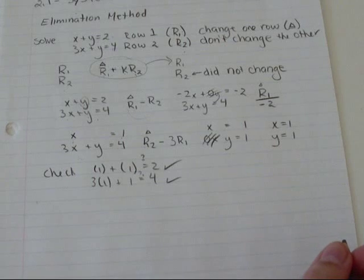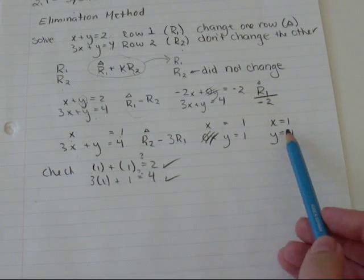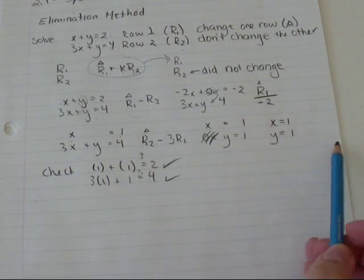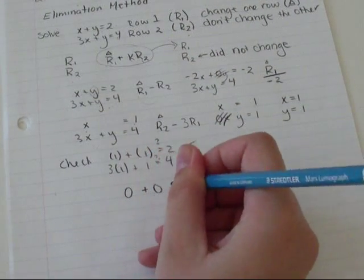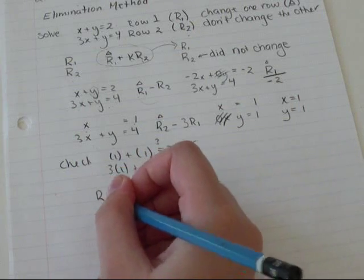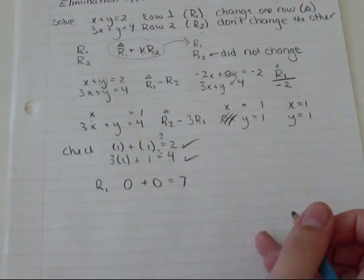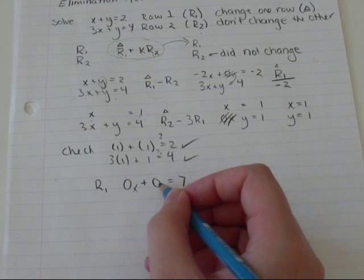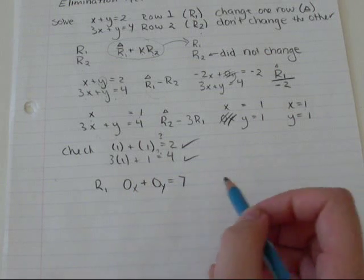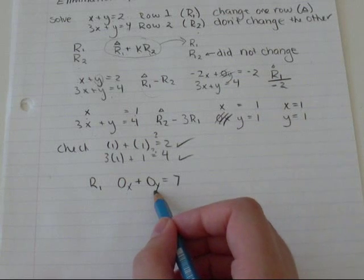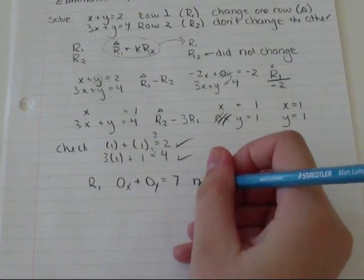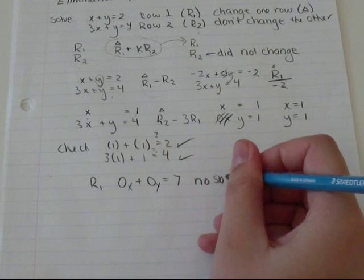So there might be a situation where you don't get something nice, X equals something, Y equals something. You could get 0 plus 0 equals 7. Let's say that's row one. So if you had 0X plus 0Y, it's never ever going to equal 7, no matter what X or Y equals. So we say that that has no solution.